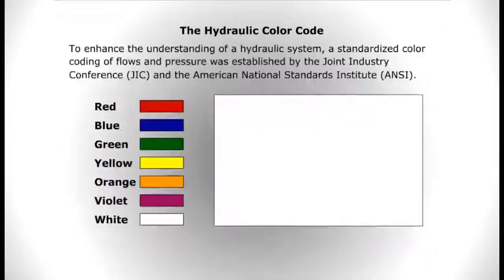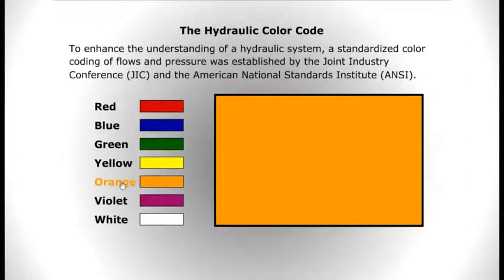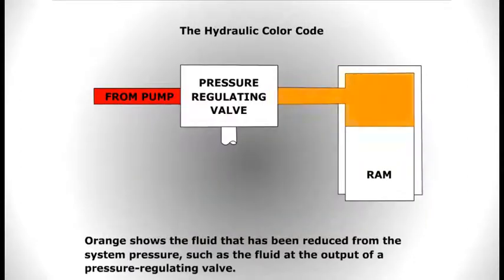Orange shows the fluid that has been reduced from the system pressure, such as the fluid at the output of a pressure-regulating valve.